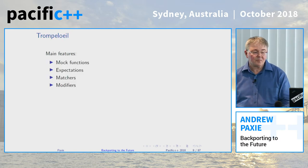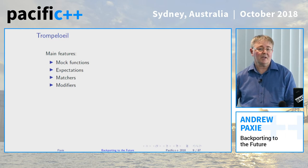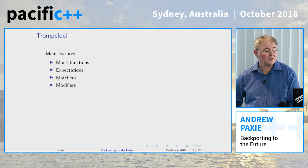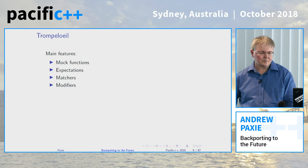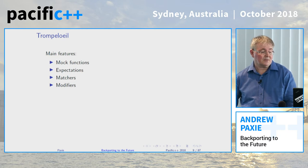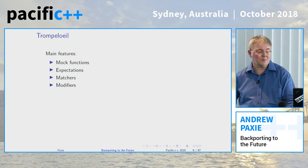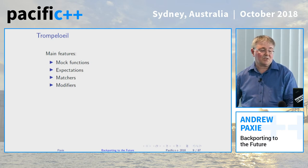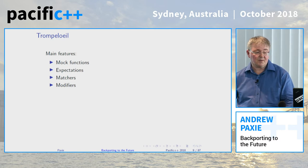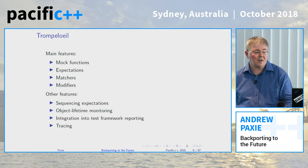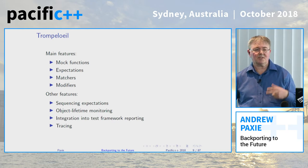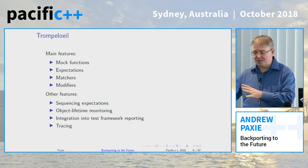The main features of the library: it basically provides mock functions for you to substitute for your production functions. Expectations, which are calls with arguments and values, returning values that you want your production code to consume. Matchers and modifiers also provide refinements to those expectations. We'll walk through that in the next few slides in more detail.